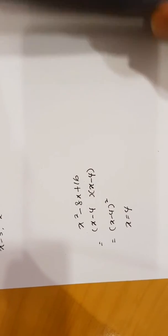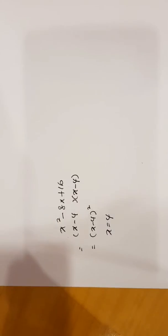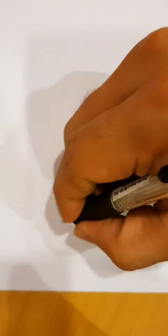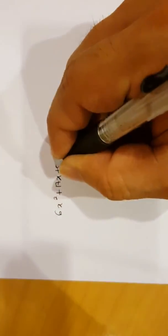These two brackets can also be written in the form X minus 4 bracket square. That's number 2.